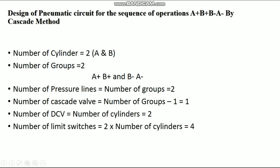First, you have to understand what this sequence of operations means. In this sequence of operations, there are two cylinders: A and B. A+ means the plus indicates extension of the cylinder, and minus indicates the retraction of the cylinder. So the sequence of operations is: A cylinder extends, B cylinder extends, B cylinder retracts, A cylinder retracts.